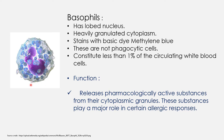Basophils make up less than 1% of circulating WBCs. The main function of basophil is to trigger the allergic response — the granules present in basophil contain histamine, which triggers the allergic response in the body. This is the cell involved in allergies.